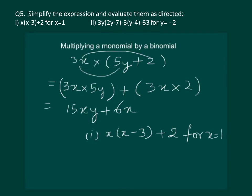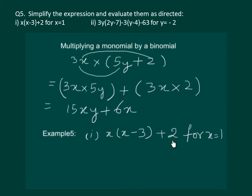Consider example 5, first part. We have x multiplied by x minus 3, plus 2. Clearly, x is a monomial and x minus 3 is a binomial. Then we will have to add 2 to it and we will get an algebraic expression in which we will substitute x equal to 1.